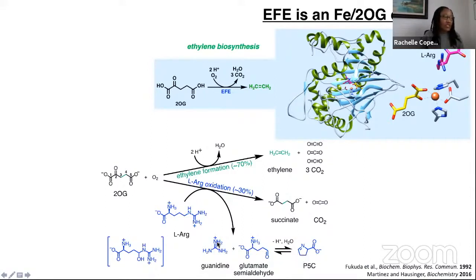This arginine oxidizing reaction we can imagine to involve a hydroxylation at C5 of L-arginine to form a hemiaminol that would break down to give the observed product. This is very emblematic of the classical iron 2-OG enzyme activity.